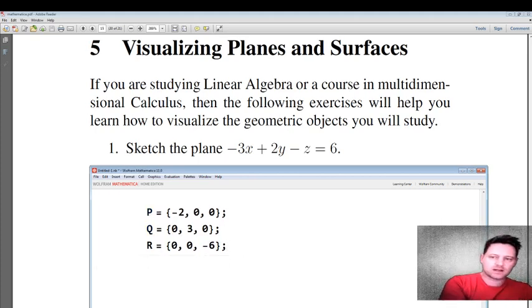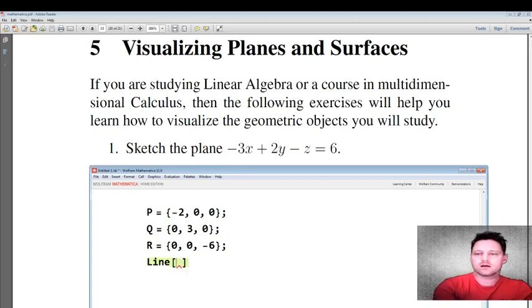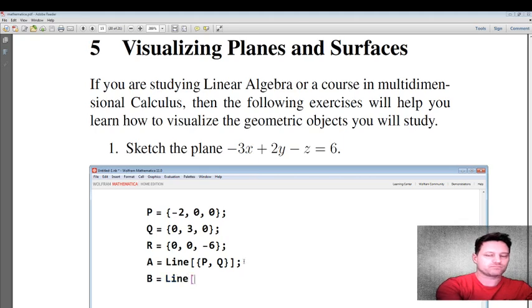Okay, next what we want to do is connect these with a line. All right, but we're going to have several lines. So let's begin with the first one. So we write line. And we want to draw a line from P to Q. Okay, so let's call this A. And then we're going to want a line from P to R. And we'll call this B.